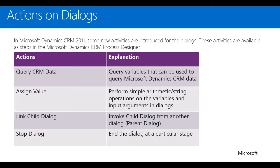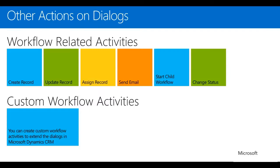Assign Value allows you to set different variables during the dialogue — you can keep track of a score or value throughout the dialogue and use it later. Link Child Dialogue is similar to Child Workflow — you're linking another dialogue to the parent, and that child dialogue can continue on from the parent. Stop Dialogue is similar to Stop Workflow — if an answer is no or a certain value, you can stop the dialogue at that point. You'll also have the normal options shared with Workflow: Create Record, Update Record, Assign Record, Send Email, Change Status, and Custom Workflow Activities.